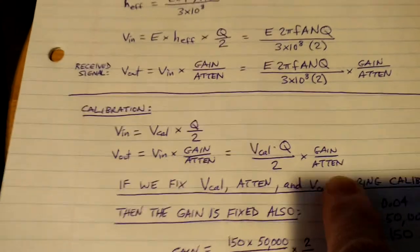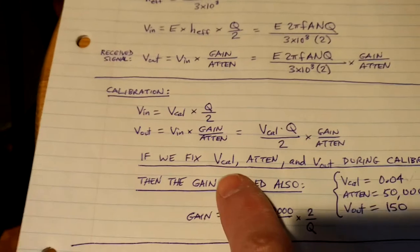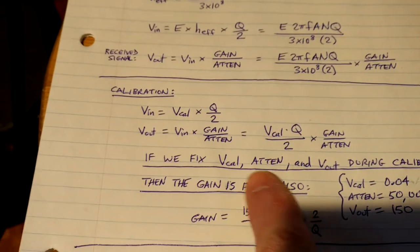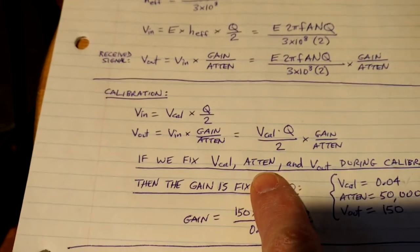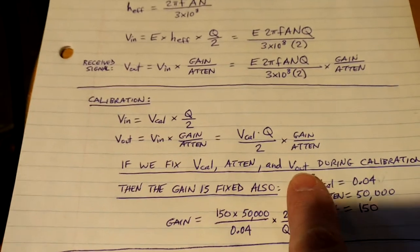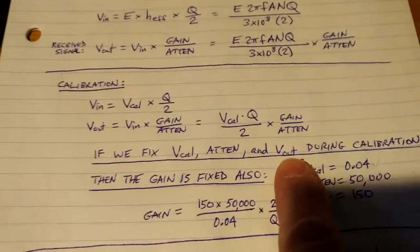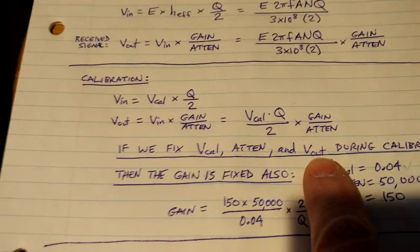Now for calibration purposes, we're going to fix the parameters. We're going to fix the calibration voltage, we're going to fix the attenuation factor, and we're going to decide on a V out on the meter for calibration purposes. These can be arbitrary, but once you set them, they have to stay that way.